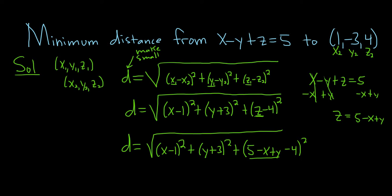The goal is to minimize d — the distance from an arbitrary point x, y, z in the plane to our point 1, negative 3, 4.